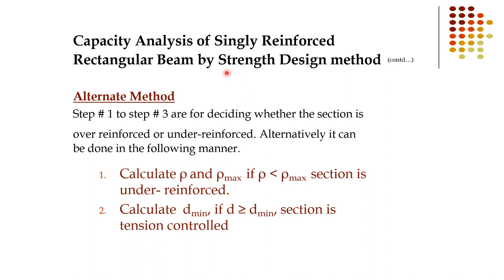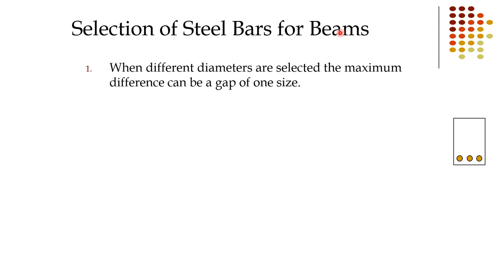An alternative method for capacity analysis: Step 1 calculates ρ (reinforcement ratio = AS / bd) and ρ_max. If ρ is less than ρ_max, the section is under-reinforced. Alternatively, calculate d_minimum — if the provided effective depth is greater than d_minimum, the section is tension-controlled and under-reinforced.